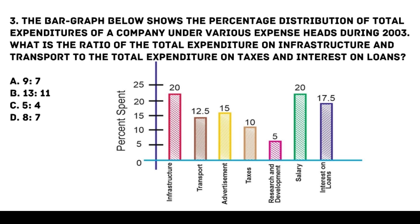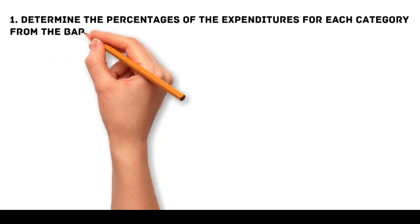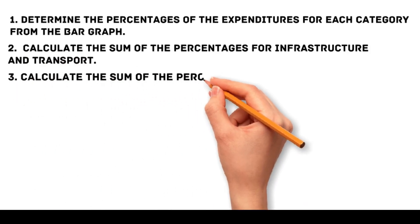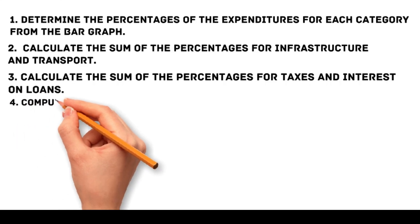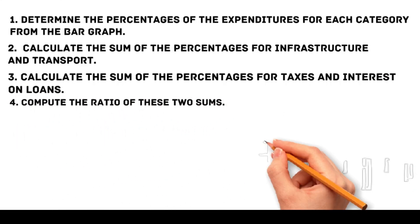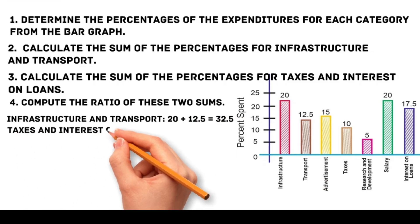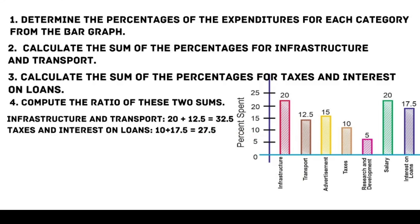To find the ratio, we determine the percentages from the bar graph: infrastructure is 20%, transport is 12.5%, taxes is 10%, and interest on loans is 17.5%. The sum of expenditures on infrastructure and transport is 20 + 12.5 = 32.5. The sum of expenditures on taxes and interest on loans is 10 + 17.5 = 27.5.